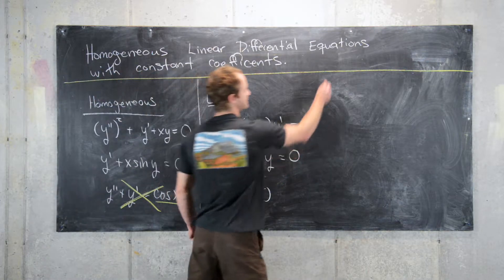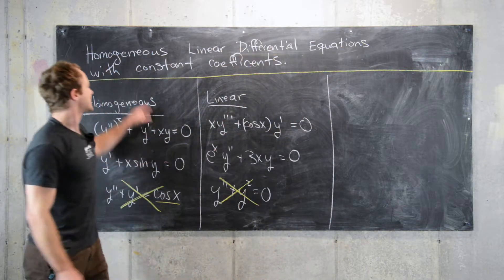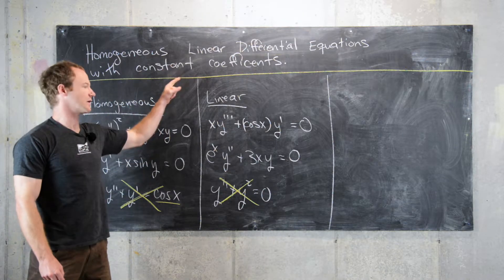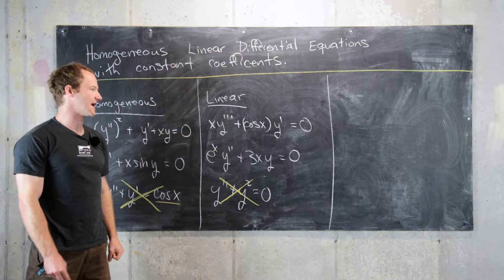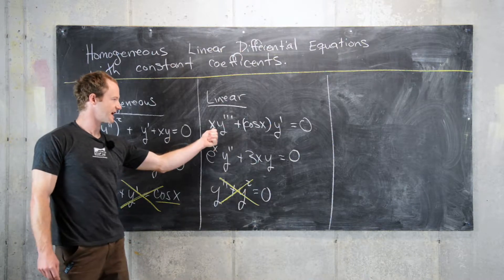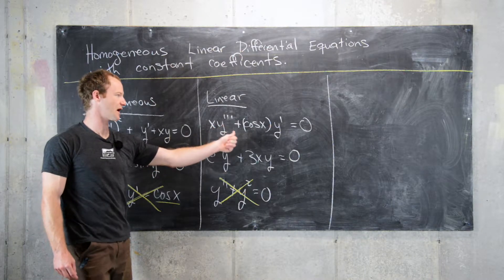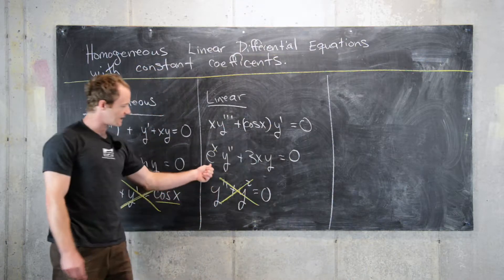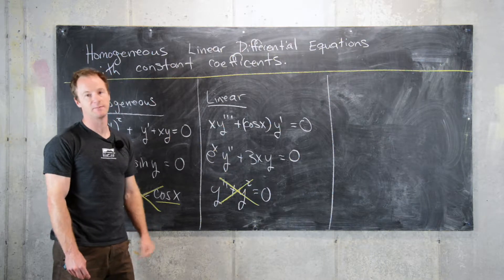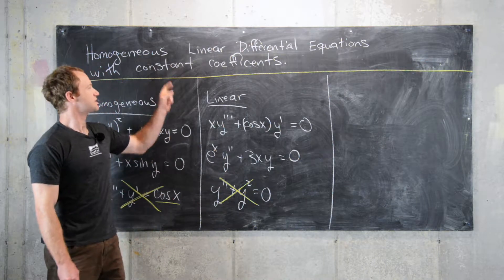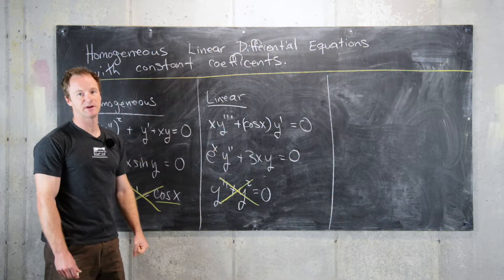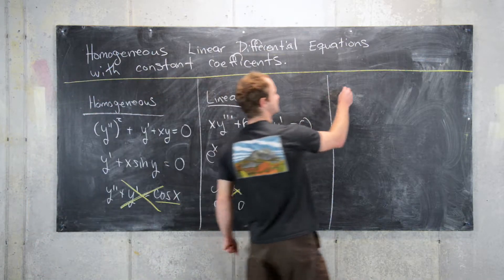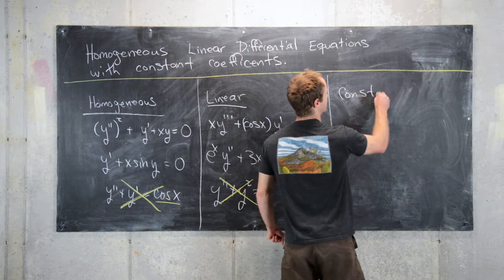Next, let's talk about constant coefficients — specifically, the coefficients of y and its derivatives. In x·y''' + cos(x)·y', x is a coefficient of y''', cosine of x is a coefficient of y', and e^x is a coefficient of y''. For constant coefficients, those coefficients of the dependent variable and its derivatives need to be constants.